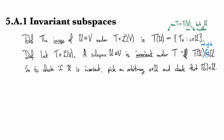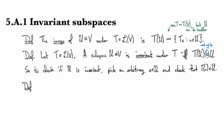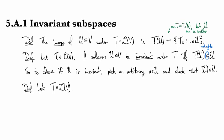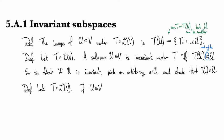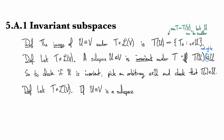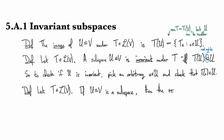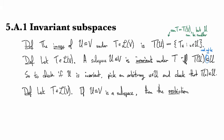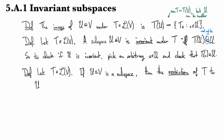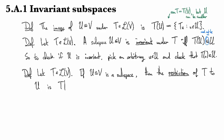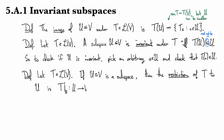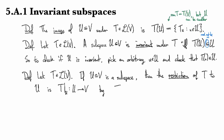There's another way to think about invariant subspaces that's useful, and it uses the idea of a restriction operator. So, suppose we take T to be our operator again. And if U is a subspace of V, then the restriction of T to this subspace is denoted with a bar and a subscript U. And this is going to be a map from U to V.